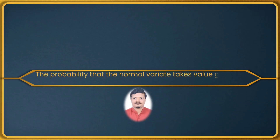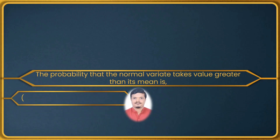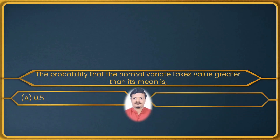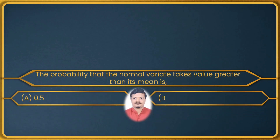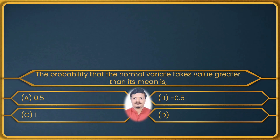Next question: the probability that the normal variate takes a value greater than its mean is — first option 0.5, second option minus 0.5, third option 1, and the last option is 0.